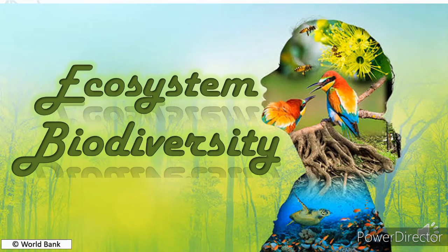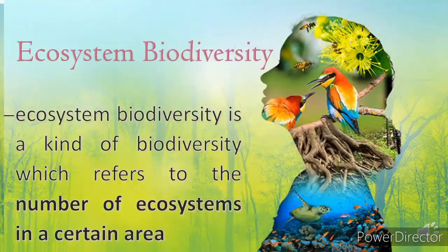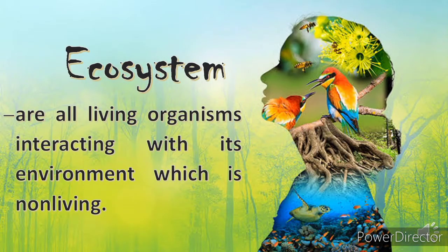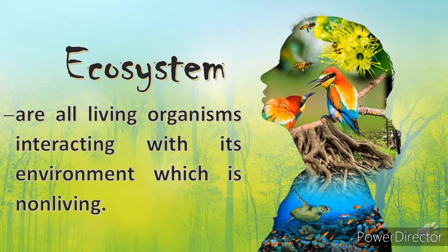Ecosystem biodiversity is a kind of biodiversity which refers to the number of ecosystems in a certain area. For example, there are a lot of ecosystems in the Philippines, which will be tackled later in this video. An ecosystem refers to all living organisms interacting with their environment, which is non-living. Living organisms include the three domains of life: eukarya, bacteria, and archaea. Non-living components include air, water, land or soil, and heat from the sun related to temperature.